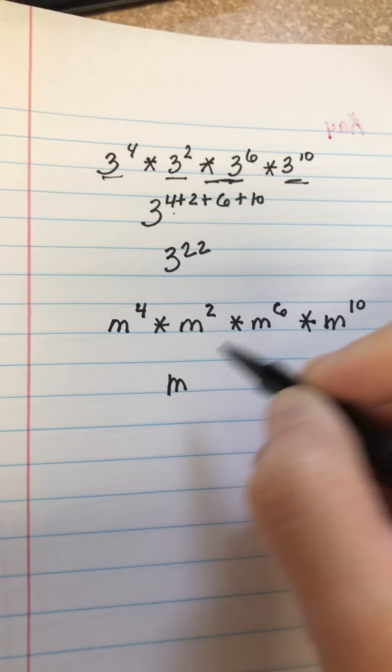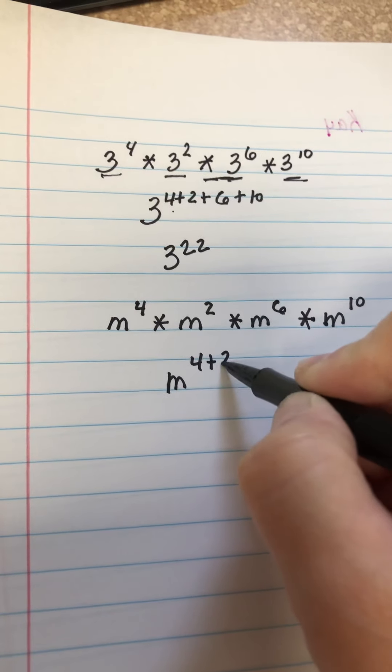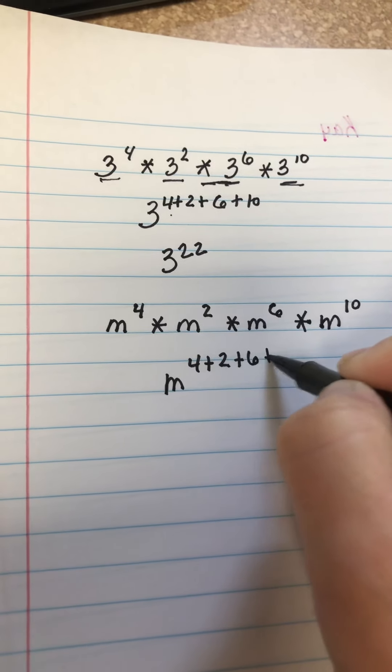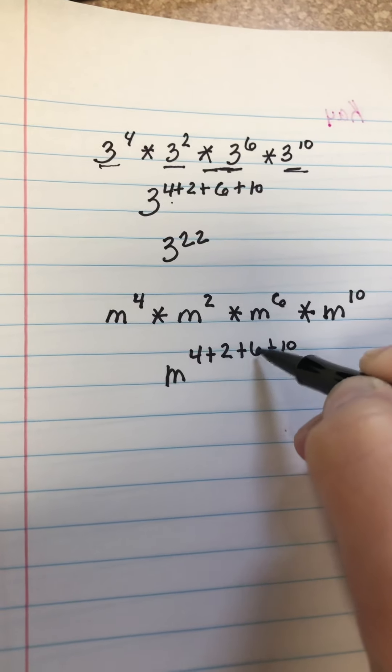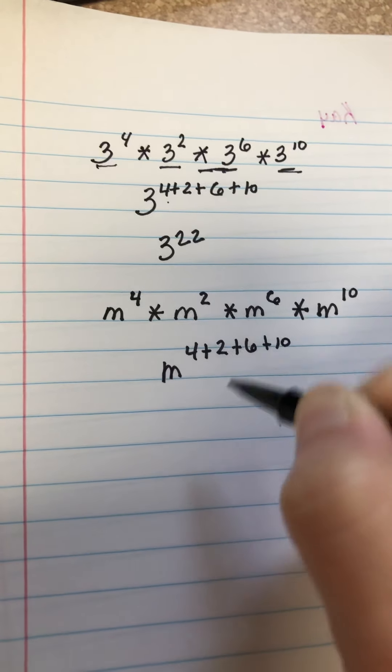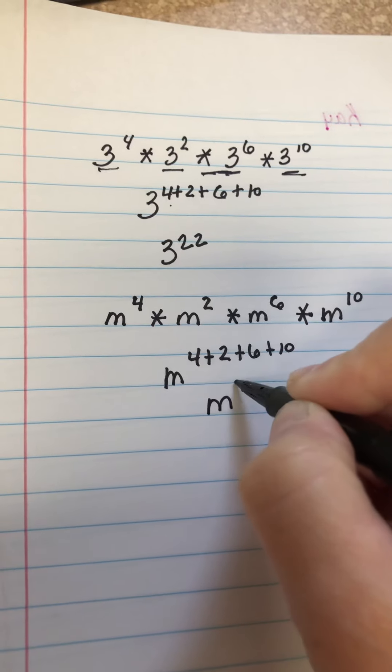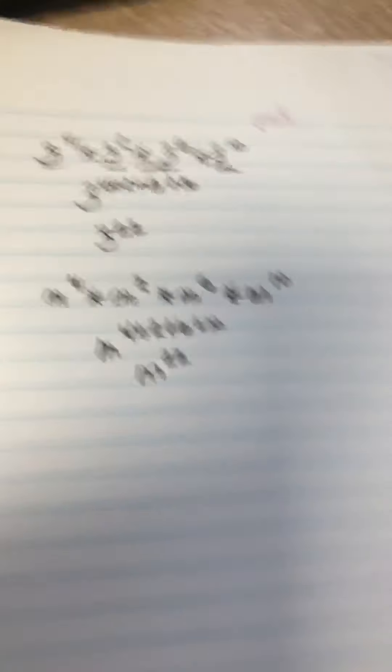Our base stays M. We still have 4 plus 2 plus 6 plus 10. 4 plus 2 is 6, 6 plus 6 is 12, 12 plus 10 is 22. So our answer is M to the 22nd power.